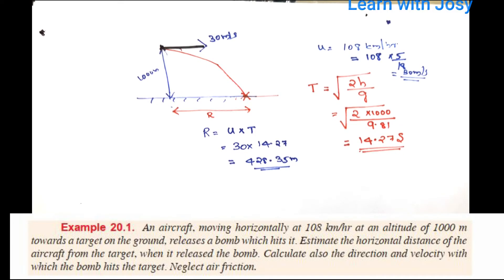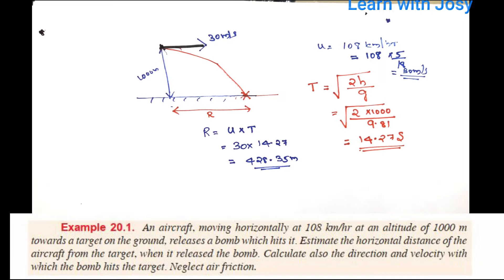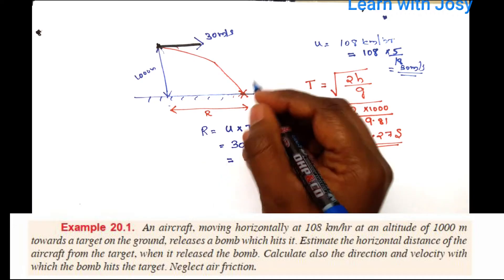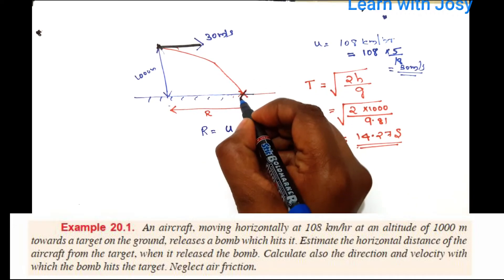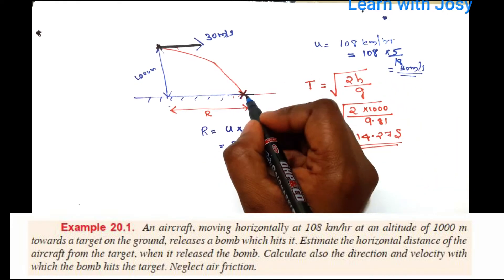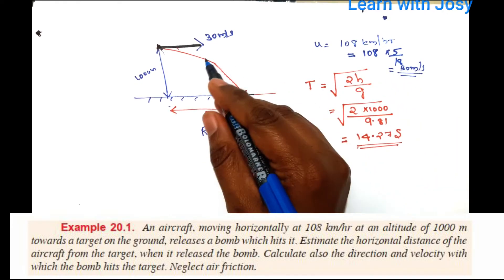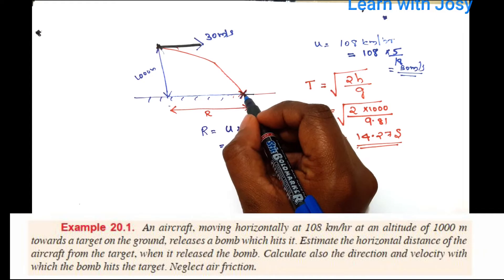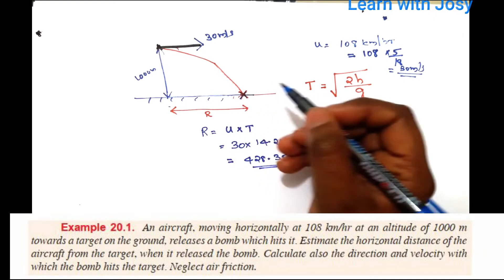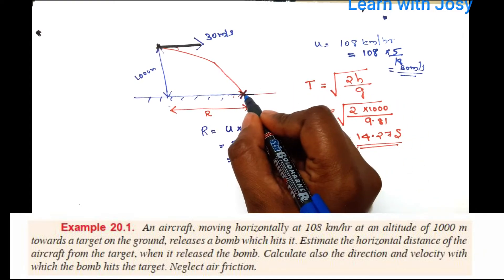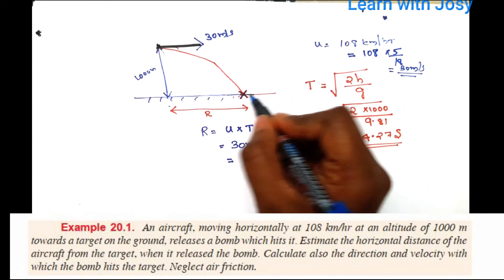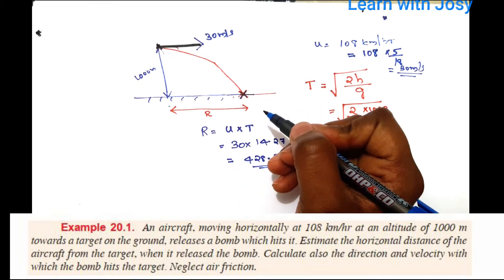The range is approximately 428.35 meters. Now we calculate the direction and velocity with which the bomb hits the target. At the target point, when the bomb hits, the velocity is determined by its components.